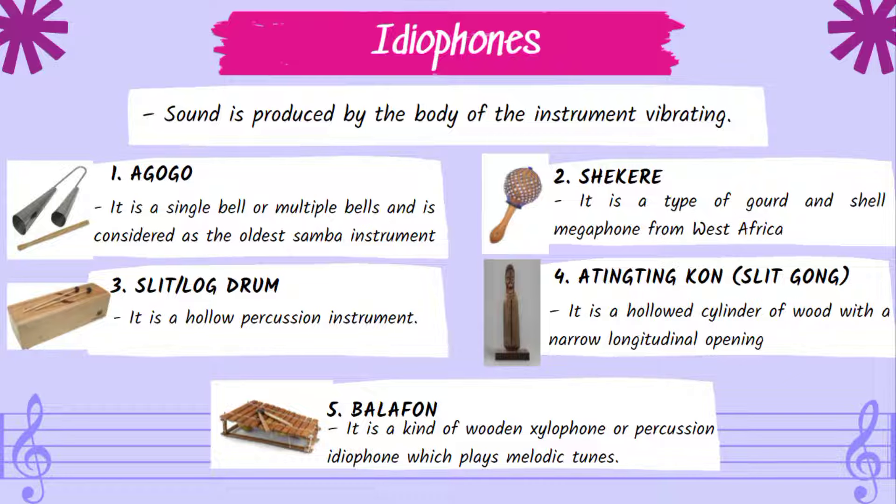Idiophones: sound is produced by the body of the instrument vibrating. Five examples are: First, Gogo — a single or multiple bell considered the oldest samba instrument. Second, Shakere — a type of gourd and shell instrument from West Africa. Third, Slit or log drum — a hollow percussion instrument. Fourth, Ting-ting-con, also known as a slit gong — a hollowed cylinder of wood with a narrow longitudinal opening. Fifth, Balaphone — a kind of wooden percussion idiophone that plays melodic tunes.